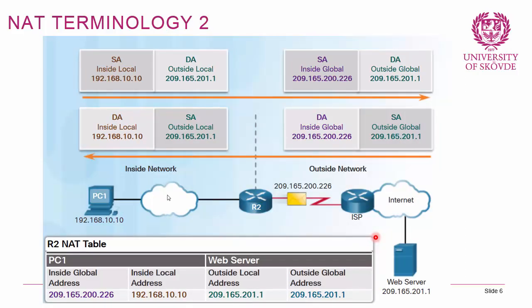Looking at return traffic: the web server addresses its return packet to the inside global address 209.165.200.226. Router 2 maintains a NAT table tracking which device is currently using that global address, so it knows to send the return traffic back to PC1.